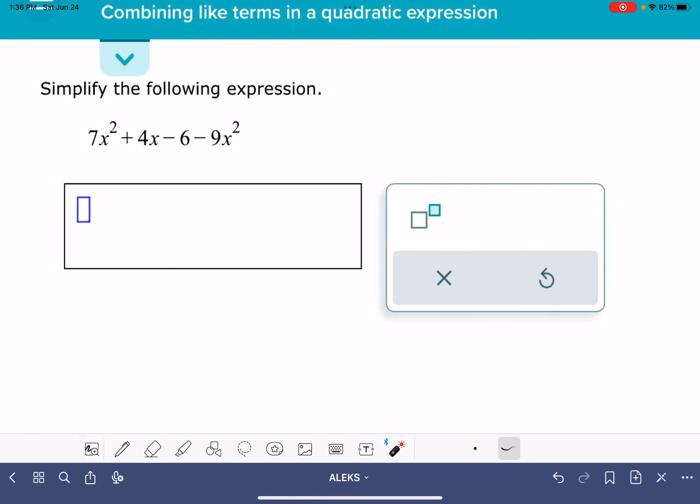The first thing that we're going to want to do is to combine the like terms, meaning combining the terms that are similar in terms of the variable x.